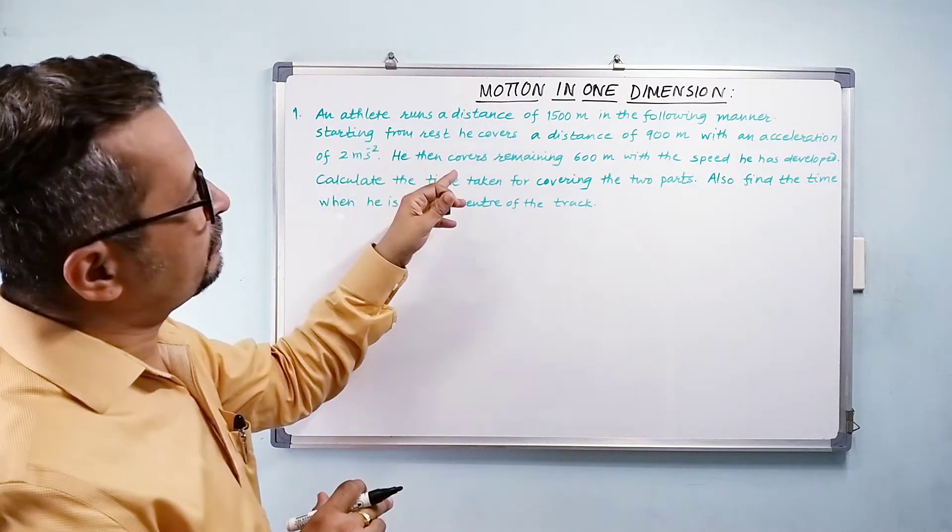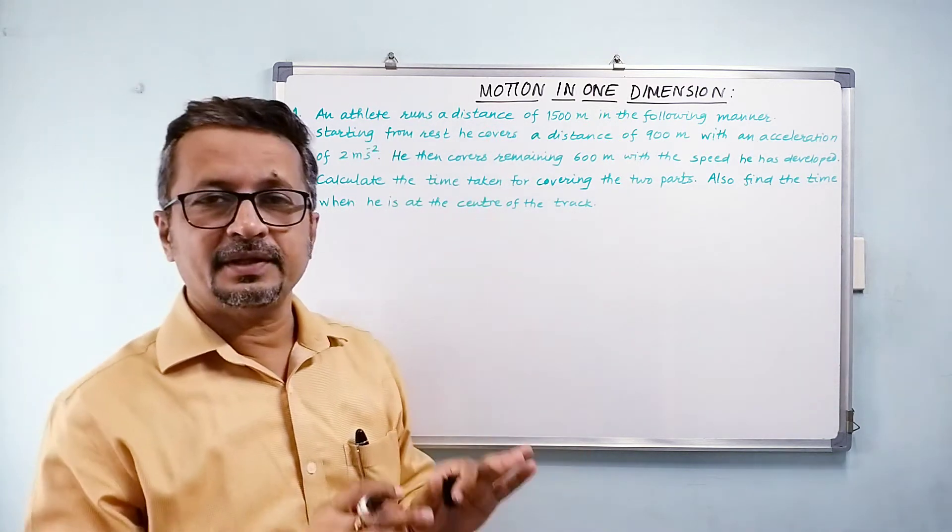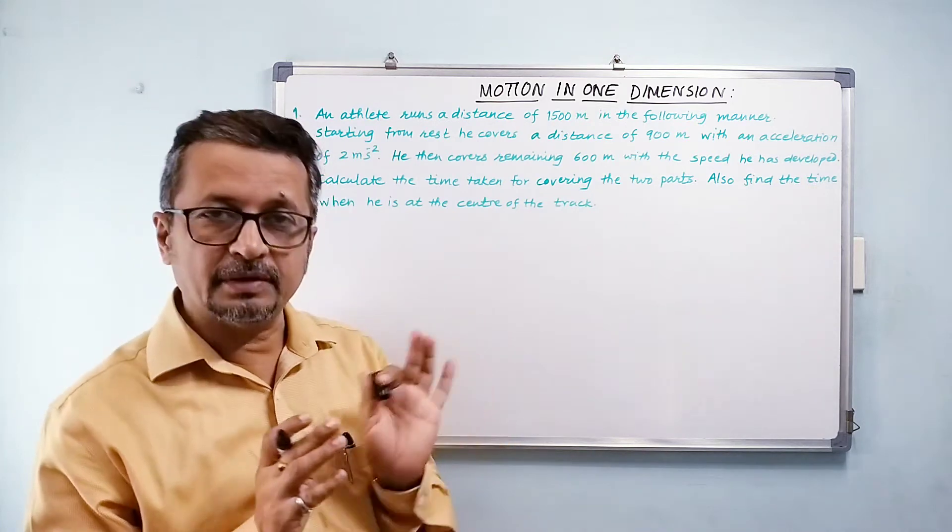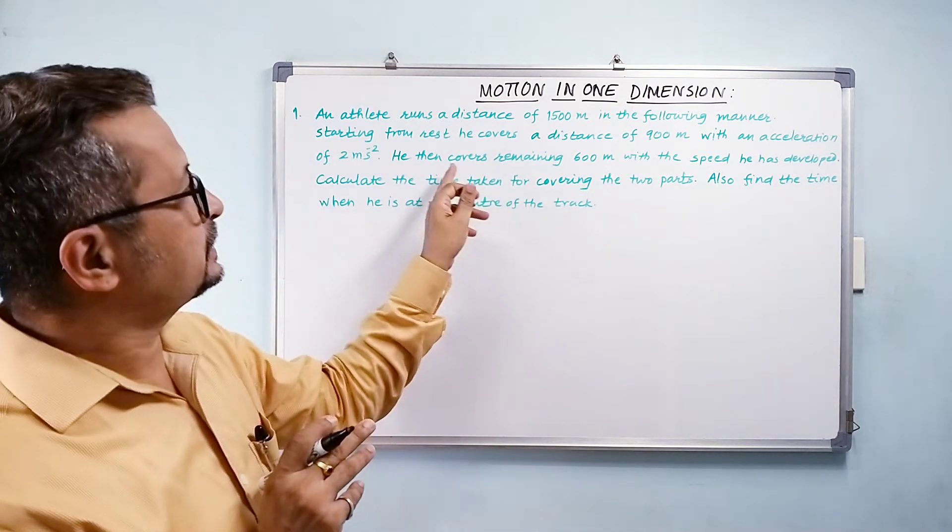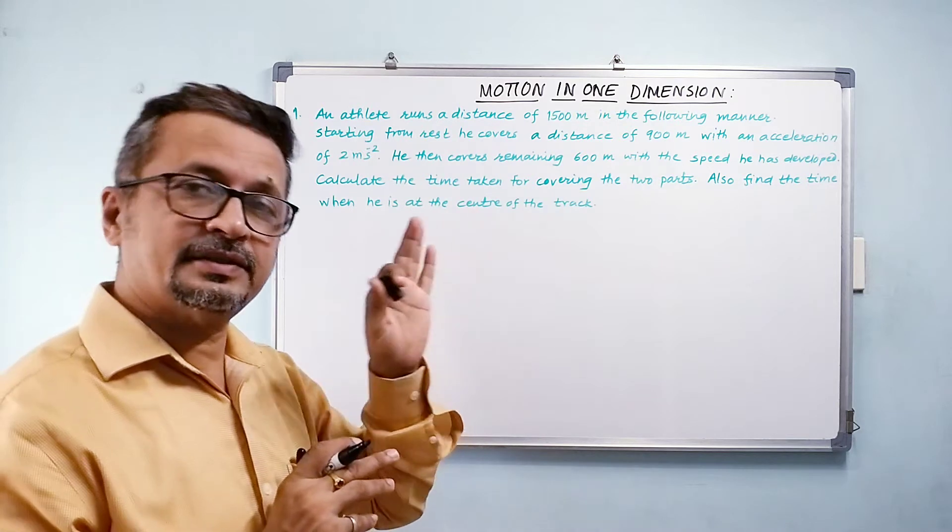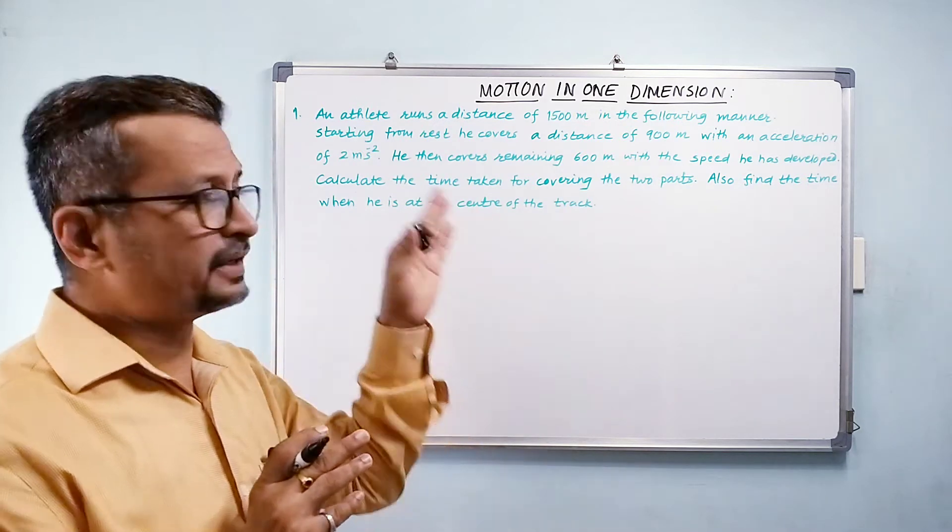He then covers the remaining 600 meters with the speed that he has developed. Now that means the remaining 600 meters is covered with that uniform speed that he has attained.